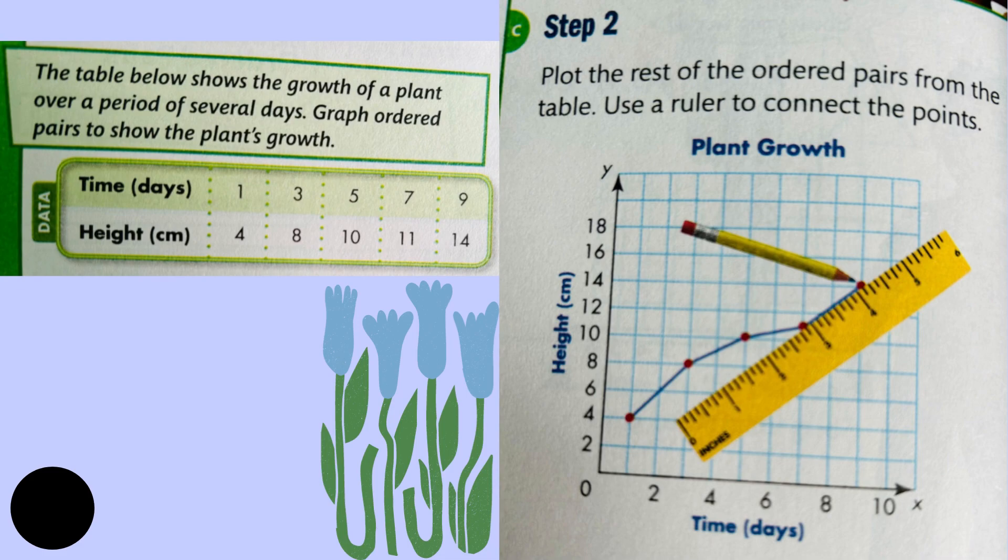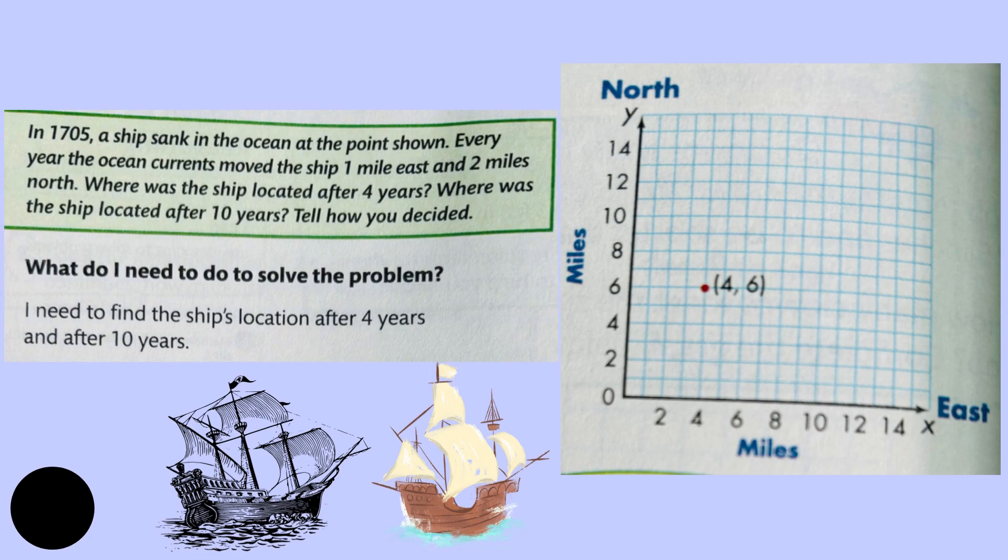Step number two: plot the rest of the ordered pairs from the table and use a ruler to connect the points.